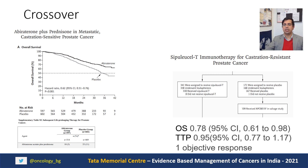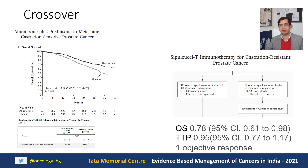On the other hand, for Sipuleucel-T — again a treatment for prostate cancer — this was its first trial and the control arm patients, after progressing, were crossed over to receive the same unproven vaccine. In usual practice these patients would have received docetaxel after progression. The apparent efficacy of Sipuleucel-T could simply reflect the placebo arm not getting docetaxel. This is supported by the fact that we see a survival gain for the drug but time to tumor progression is not different, and there is just one objective response.